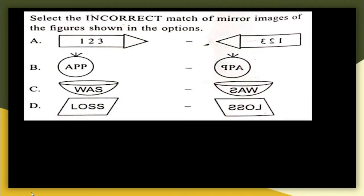Next question: select the incorrect match of mirror images. Looking at option B — the word APP is given. In a mirror image the left and right interchange but top and bottom do not. Here one P is written incorrectly, so option B is the incorrect mirror image. The correct answer is option B.